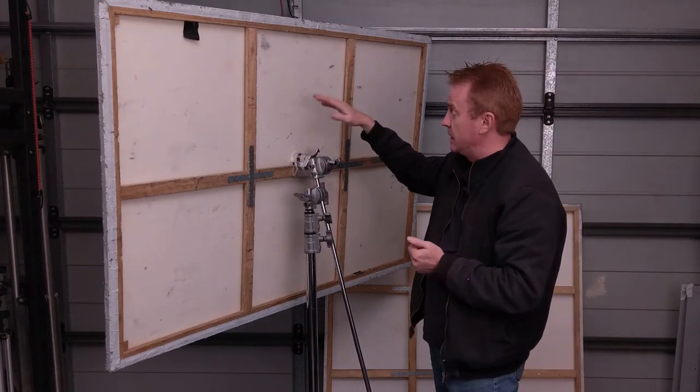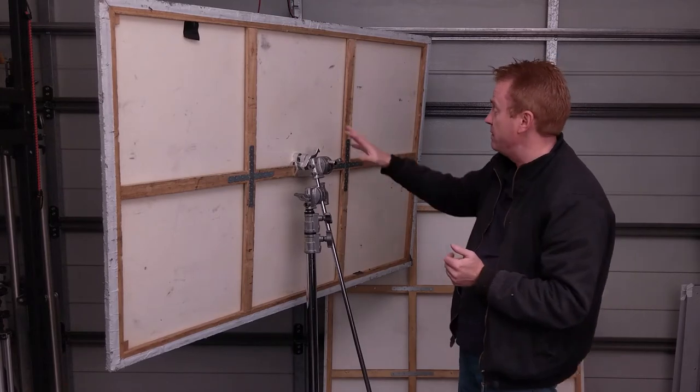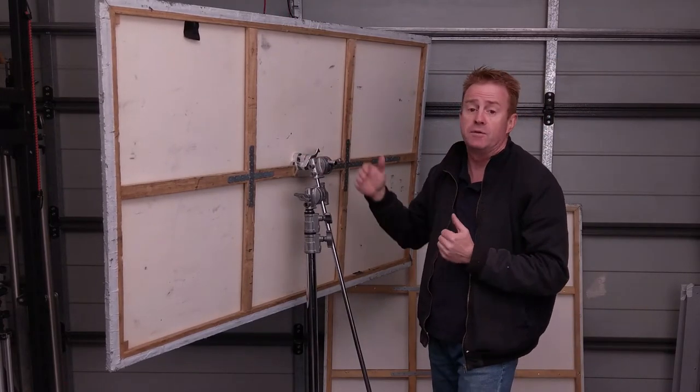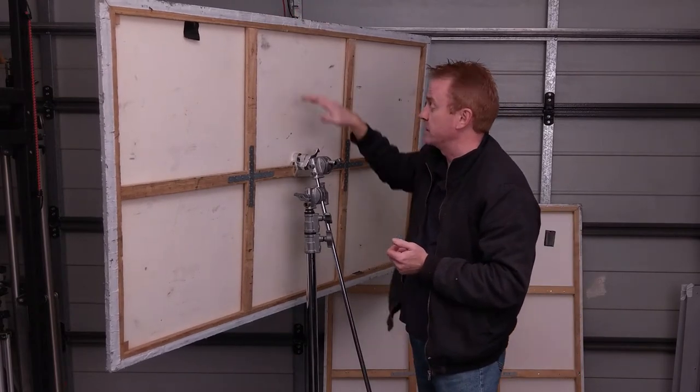So that means I can use a Cardellini clamp and mount them directly to a C-stand. Now that gives me the advantage of having the stand behind the reflector. So if you're shooting a reflective product for example, you don't see any clamps on the reflector because they're behind.